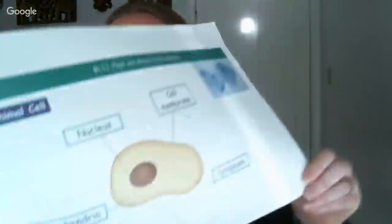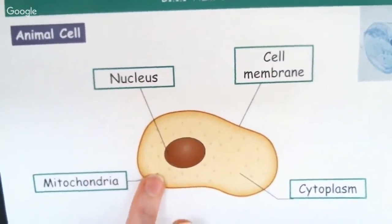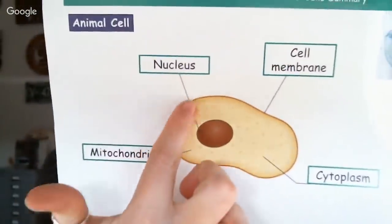Comparing that to eukaryotic cells, they do have a nucleus, they're more complex in their nature, and they're larger in size from ten micrometers to 100 micrometers. We need to be able to label those cells. Our animal cell has four parts: the mitochondria, the nucleus in the center, the cell membrane around the outside, and the cytoplasm.